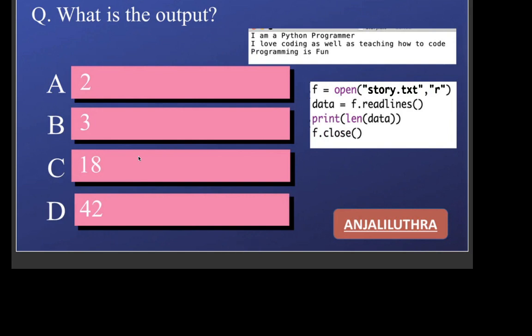Next question: data is equal to f.readlines(), and we print len(data). readlines() reads all the lines and stores them as a list, where the first line is the first string, the second line is the second string, the third line is the third string. You have 3 lines, so the length will also come as 3. The answer for this question is 3.